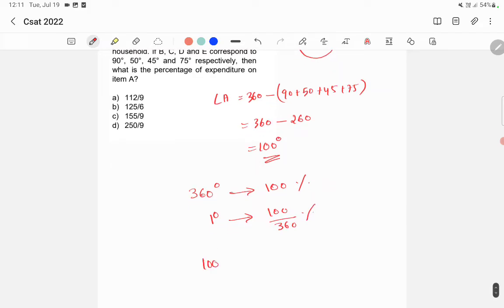So if it is 100 degree, it will correspond to 100 by 360 into 100. So we will divide by 4. This is 9, this is 25. So we will get 250 by 9 percentage. So the answer is D, 250 by 9.